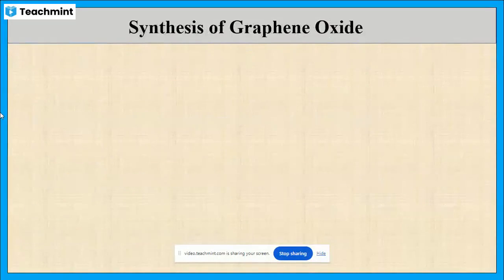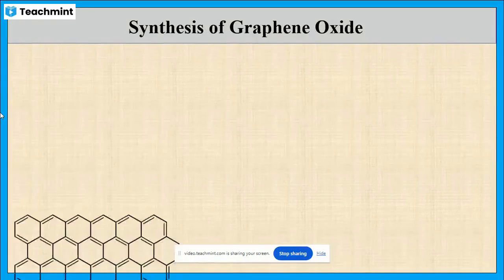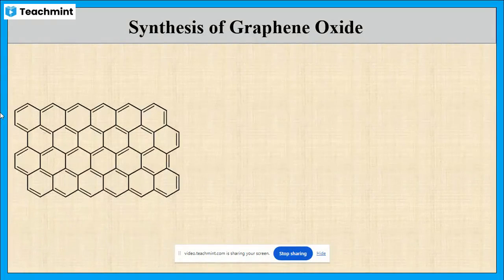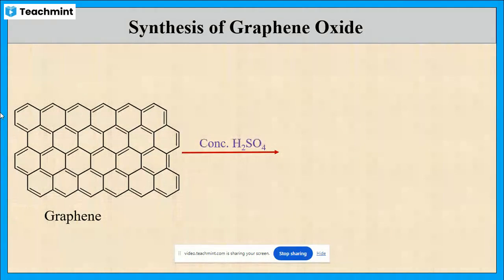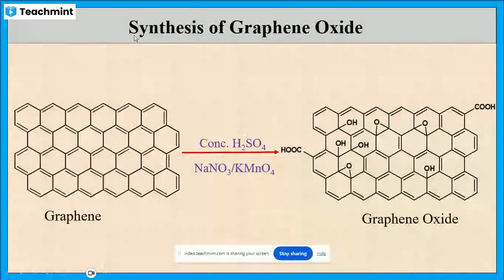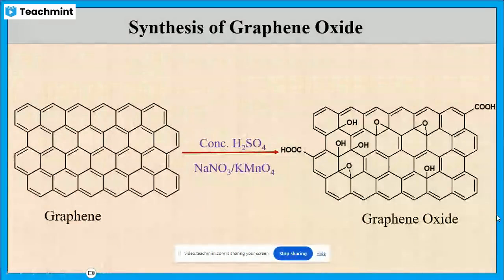Next, let us see how to synthesize graphene oxide. We get graphene oxide by oxidizing graphene with concentrated sulfuric acid, sodium nitrate, and potassium permanganate.